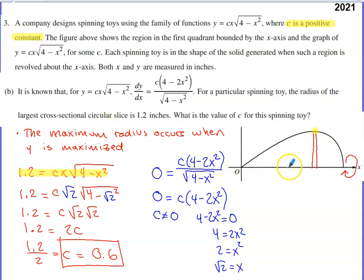If c equaled zero, you'd have a flat graph for y. It wouldn't actually move up off the x-axis ever. So c is not going to equal zero. So that must mean that 4 minus 2x squared is going to have to equal zero. And if I solve that, I end up with x being equal to the square root of 2.